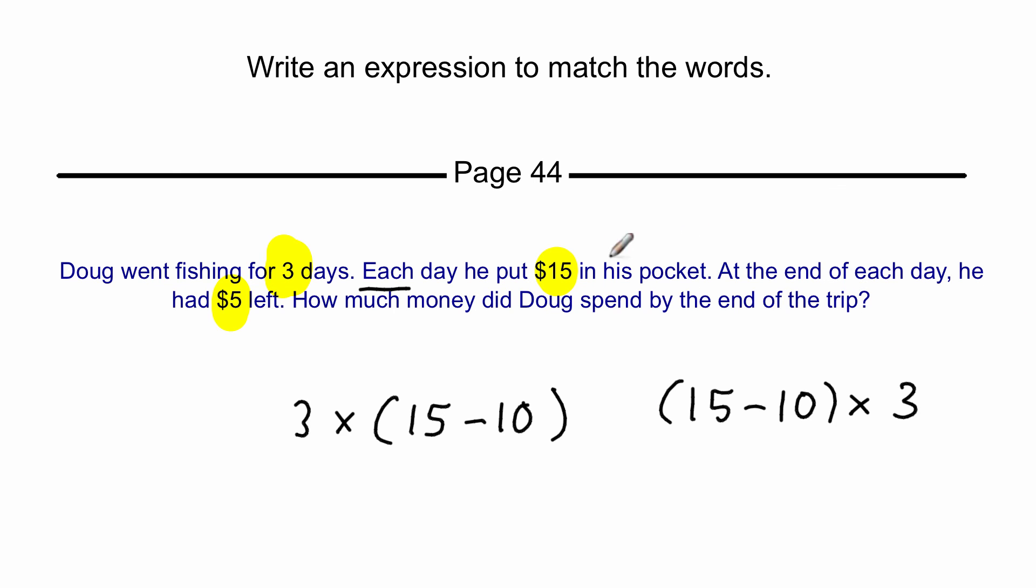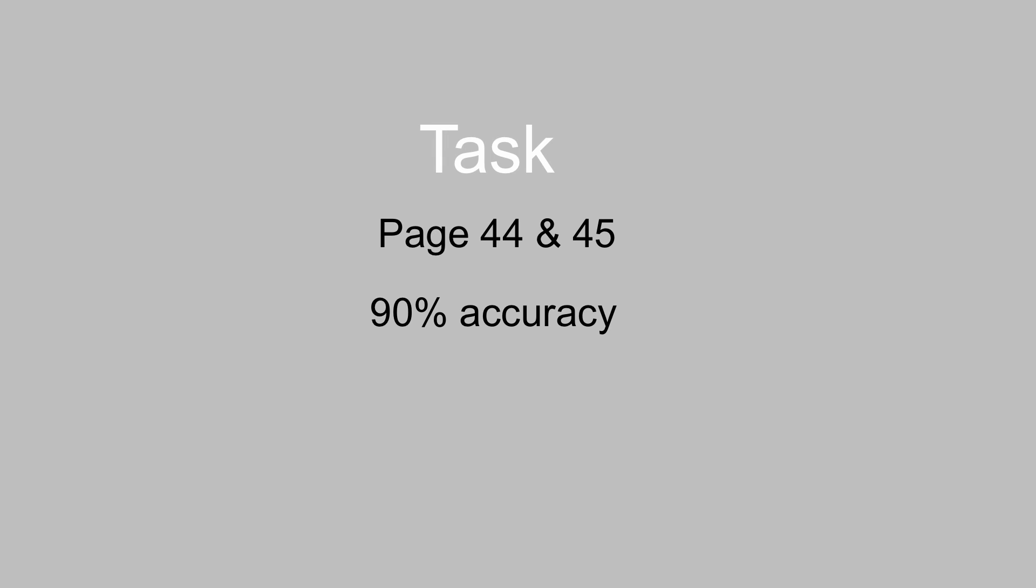All right, so these longer ones are a little bit tricky. Sometimes you have to read them really carefully because some people might say three times 15 minus five, but really you're not subtracting five because he had five left. That's kind of the answer to a subtraction problem. They're not easy, people. All right, here's your task. Working on page 44 and 45 and getting that at a 90-degree accuracy, if you can do that, you have mastered the skill. Good luck.